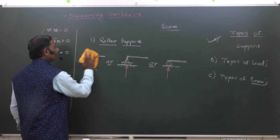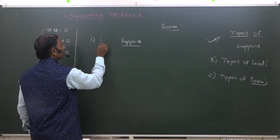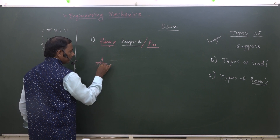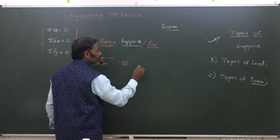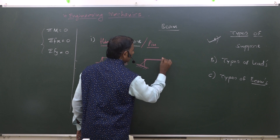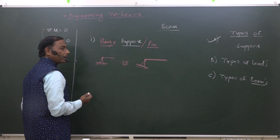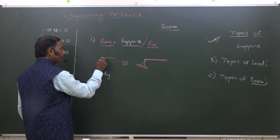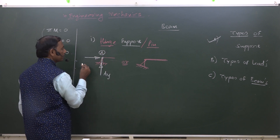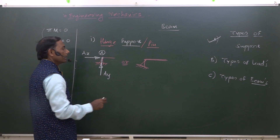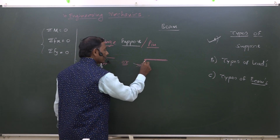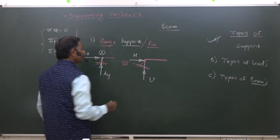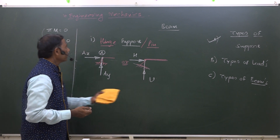Another type of support is called hinge support, also called pin support. Pin support is shown symbolically, whether resting on a horizontal or inclined floor. It has two components of a single inclined reaction: one component in the Y direction — represented as AY if the support is A — and another in the horizontal direction, AX. So AX and AY are the two components for a hinge or pin support.